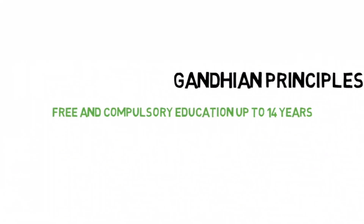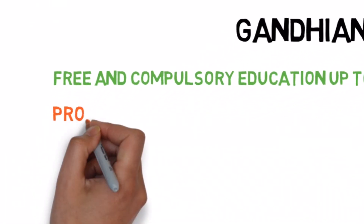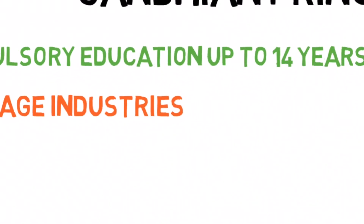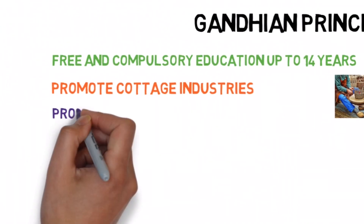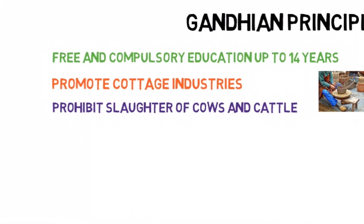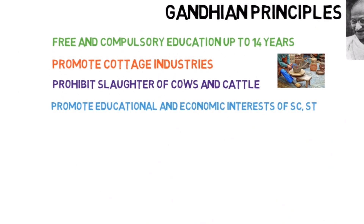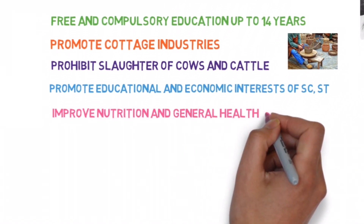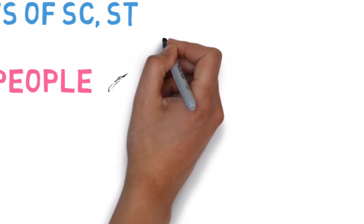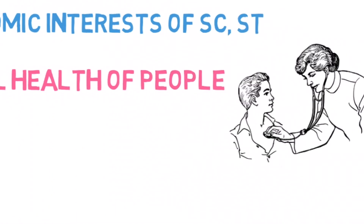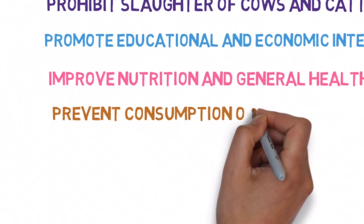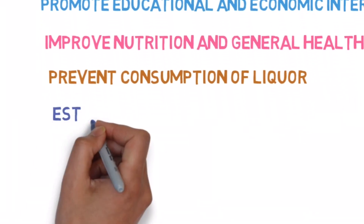His suggestions were to provide free and compulsory education for all children up to the age of 14, promote cottage industries and villages, prohibit slaughter of cows and cattle and modernize agriculture, promote the educational and economic interests of the scheduled castes, scheduled tribes and other weaker sections of the society, improve the level of nutrition and general health of the people, prevent consumption of liquor and other harmful drugs, and also establish village panchayats.